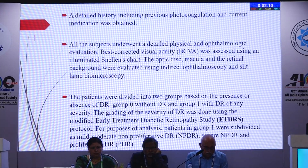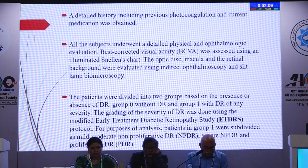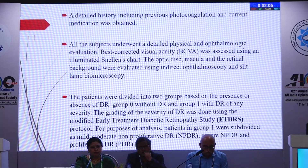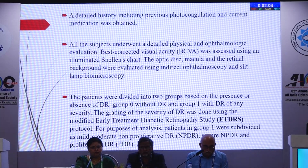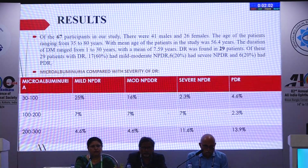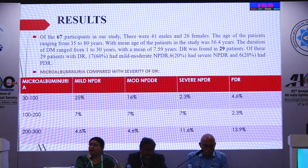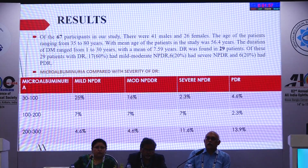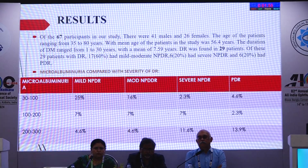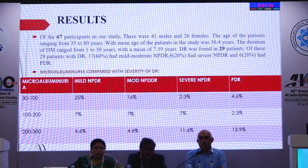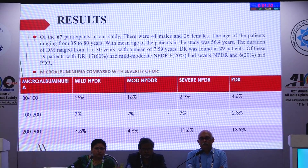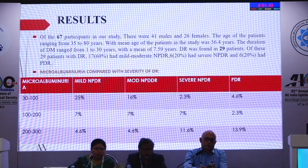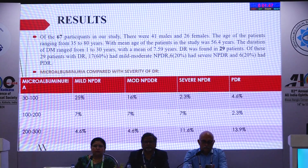Patients were divided into group 0 without diabetic retinopathy and group 1 with diabetic retinopathy of any severity. Group 1 was further subdivided into mild to moderate NPDR, severe NPDR, and proliferative diabetic retinopathy. There were 67 participants in our study — 41 males and 26 females — with age ranging from 35 to 80 years and a mean age of 56.4 years.